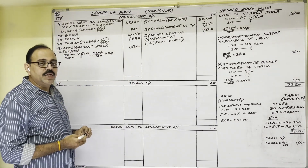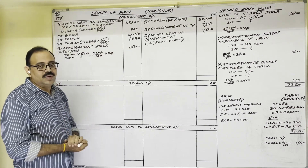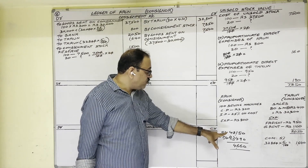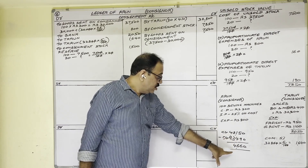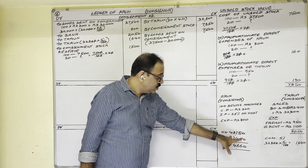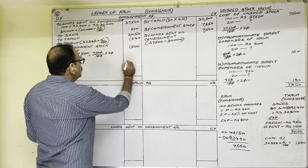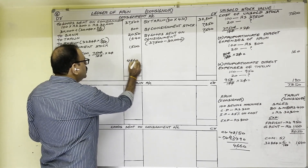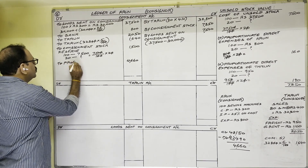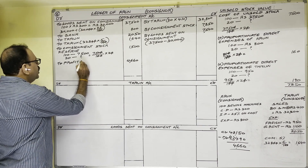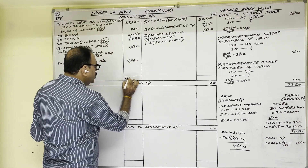Now everything is completed. Finally, we calculate profit or loss by totaling both sides. Credit amounts total is 48,150 rupees; debit amounts total is 43,490 rupees. Income is more than expenditure, so the difference of 4,660 is profit. Since debit side total is less, show 4,660 on the debit side and transfer this profit to Profit and Loss Account. Both sides total to 48,150.